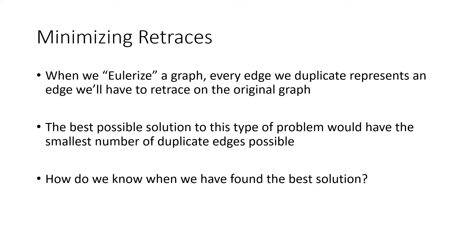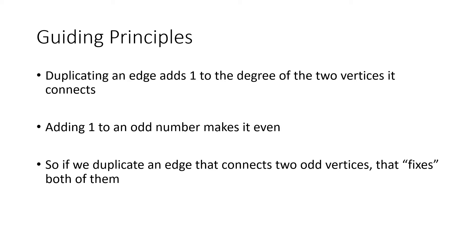The idea is to minimize retracing by minimizing duplicated edges. How do we know if we've found the best solution? Duplicating an edge adds one to the degree of both vertices it connects. If we add one to an odd number, that fixes it — makes it even. So the ideal situation is to duplicate an edge that connects two odd vertices, fixing both at once. We can't always do this, but that's the goal.